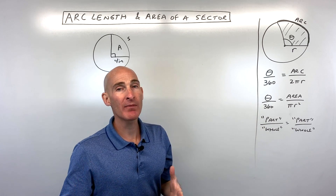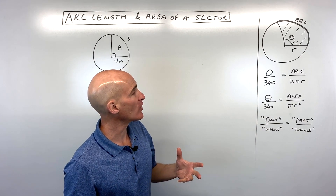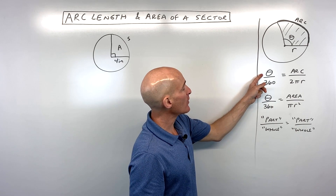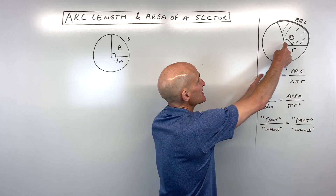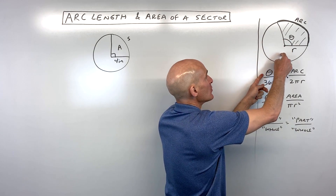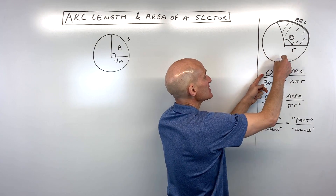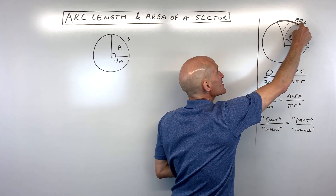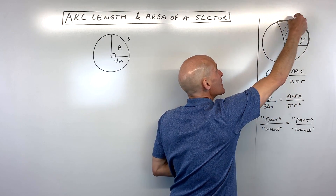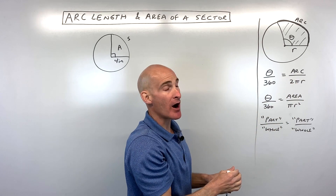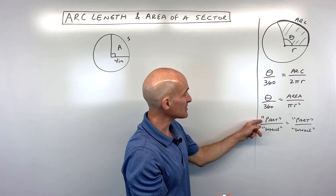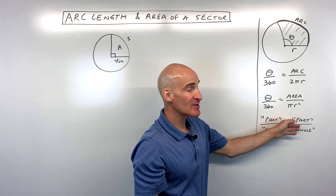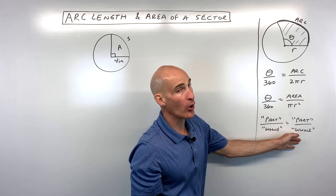When we talk about using a proportion, what I like to think about is you have a ratio of this central angle theta to 360 degrees, and that is going to equal the ratio of this arc to the entire circumference, which is 2πr. So the part to the whole is the same as a ratio of the part to the whole.